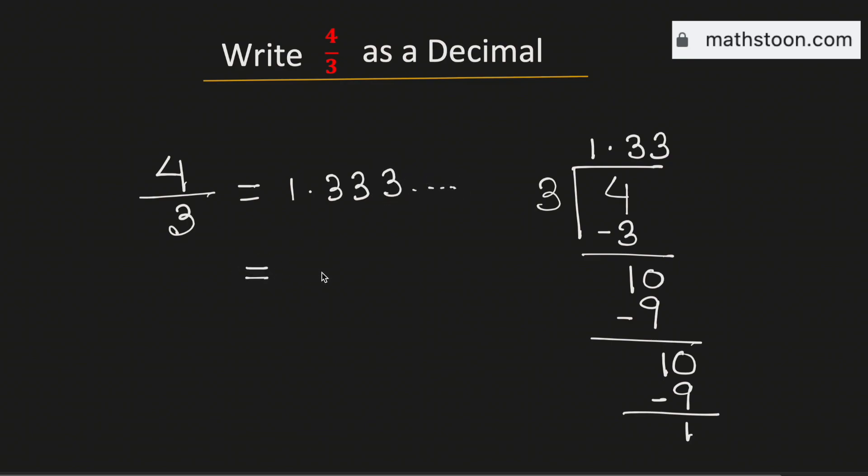And this can be written as 1.3 bar. This means 4 over 3 as a decimal is equal to 1.3 with 3 repeating. And this is our final answer.